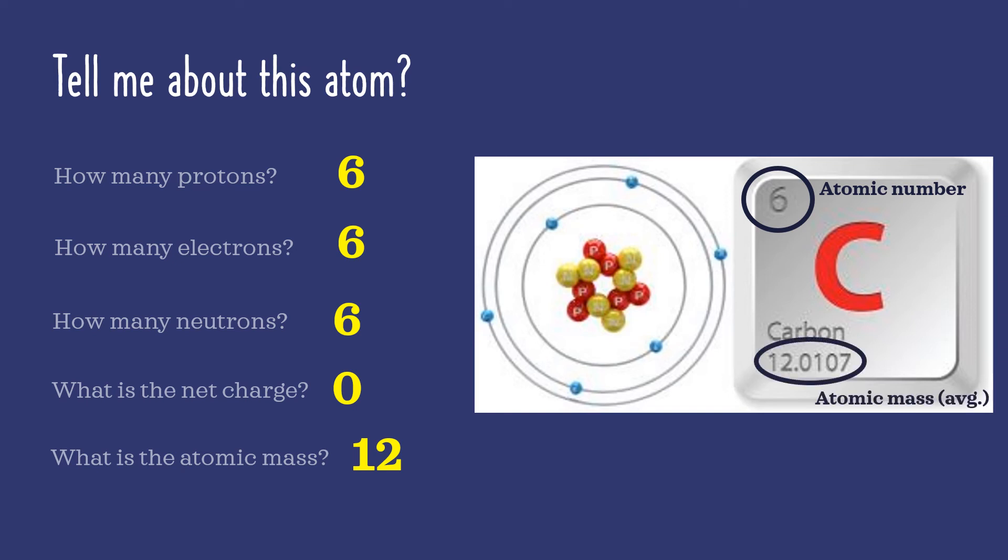This other number at the bottom of the square is the average atomic mass observed in carbon atoms found in nature. Remember I said that the number of neutrons in an element's atoms can vary slightly. This average isn't a round number because it considers that variation.